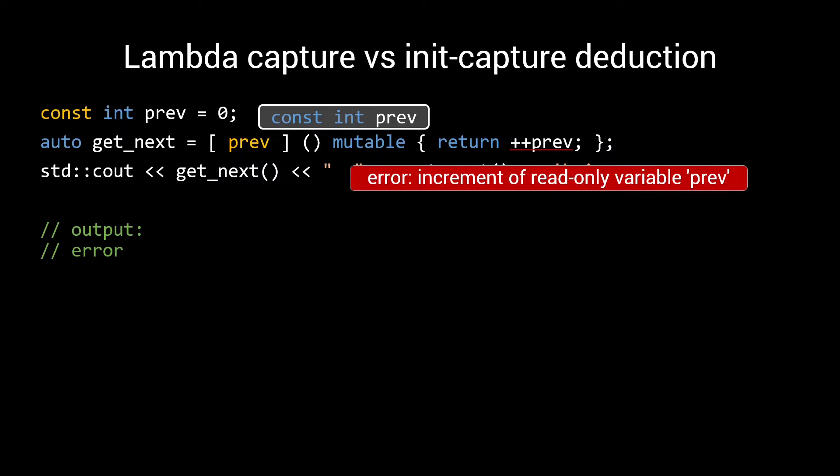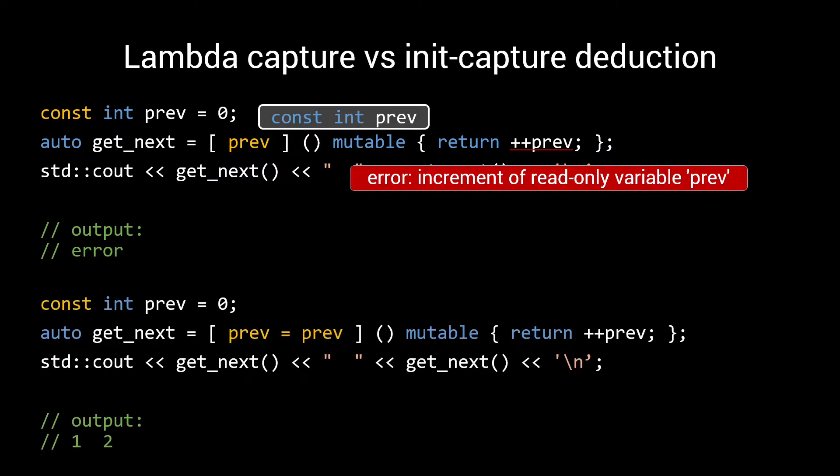Now if we create an exact copy of this lambda, but use lambda init capture instead of the normal by value capture, I am using the auto-type deduction rules to determine the type of the local pref member. As a result, my local pref member is deduced as an integer, not as a const integer, making this lambda behave as expected.